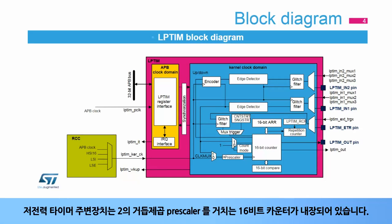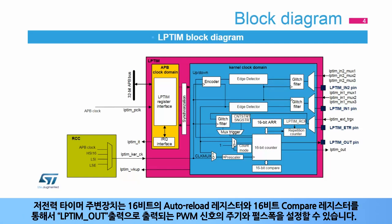The low power timer peripheral embeds a 16-bit counter that is fed through a power-of-2 pre-scaler. It also features a 16-bit auto-reload register and a 16-bit compare register that are used to set the period and duty cycle, respectively, for a PWM waveform signal output on the timer's LP-TIM-OUT output.